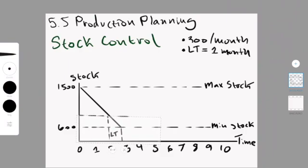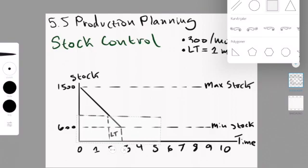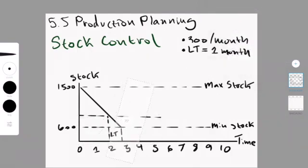Then you need to know the lead time, which is the amount of time it will take for your supplier to get you the products, which is one month in this case. So I draw a dotted up line from one month before you reach the minimum stock, which is at two months.